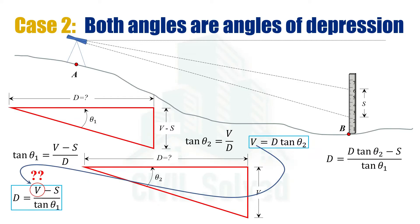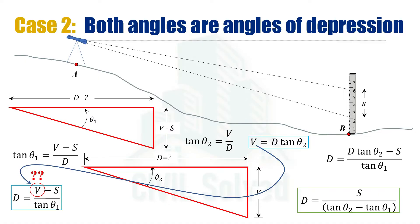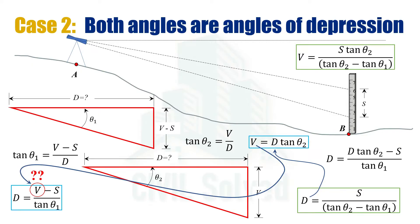Putting the value of V into the equation for D and simplifying, we get the final equation for D in terms of S, theta 1, and theta 2. All three variables — staff intercept S, theta 1, and theta 2 — can be noted in the field. Once we have the value for D, putting that back into the equation for V gives us V in terms of S, theta 1, and theta 2, all of which can be noted in the field.